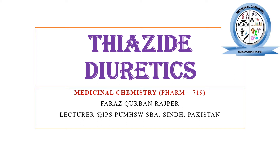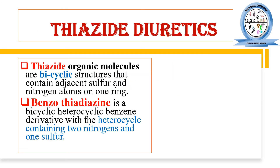We will also discuss the chemical synthesis of chlorothiazide. Thiazide diuretics are basically organic molecules that contain bicyclic rings in their chemical structure. Those organic compounds which have two cyclic rings, in which one of the rings has sulfur and nitrogen atoms adjacent to one another, are known as thiazide molecules.